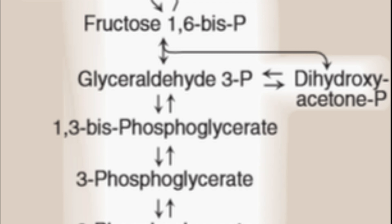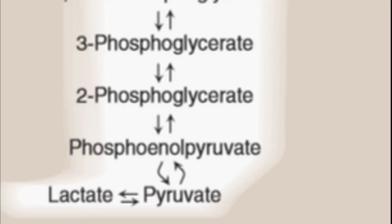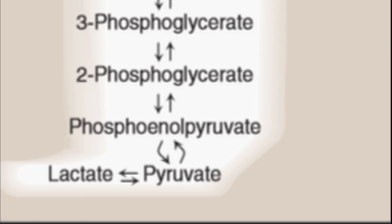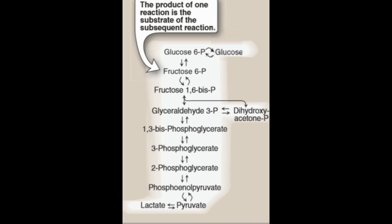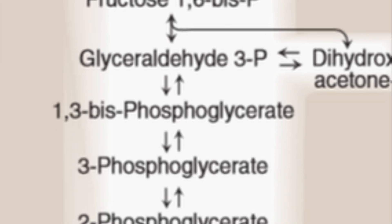Phosphoglycerate mutase catalyzes 3-phosphoglycerate into 2-phosphoglycerate — just a change in numbers. The next enzyme is enolase, which converts 2-phosphoglycerate into phosphoenolpyruvate. The last enzyme is pyruvate kinase, which leads to the final product: phosphoenolpyruvate to pyruvate — just remove 'phospho' and 'enol.'